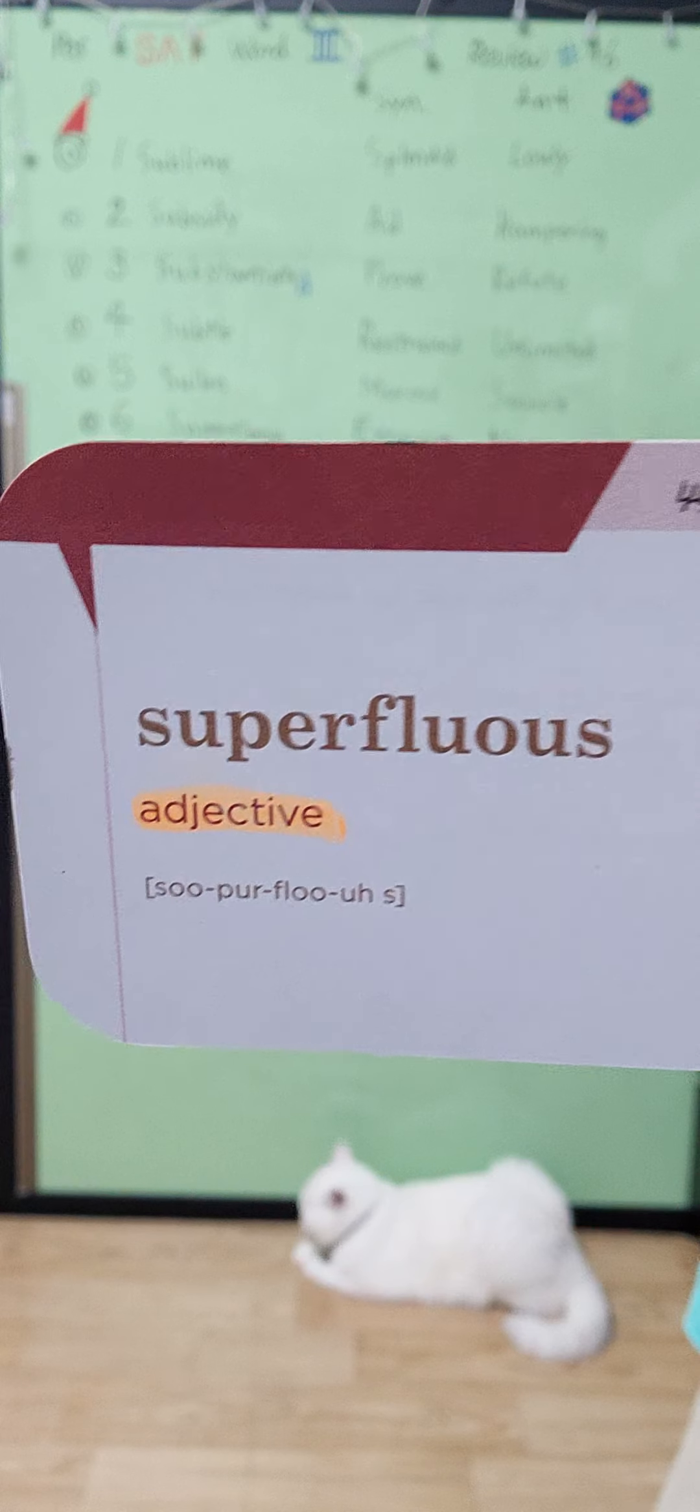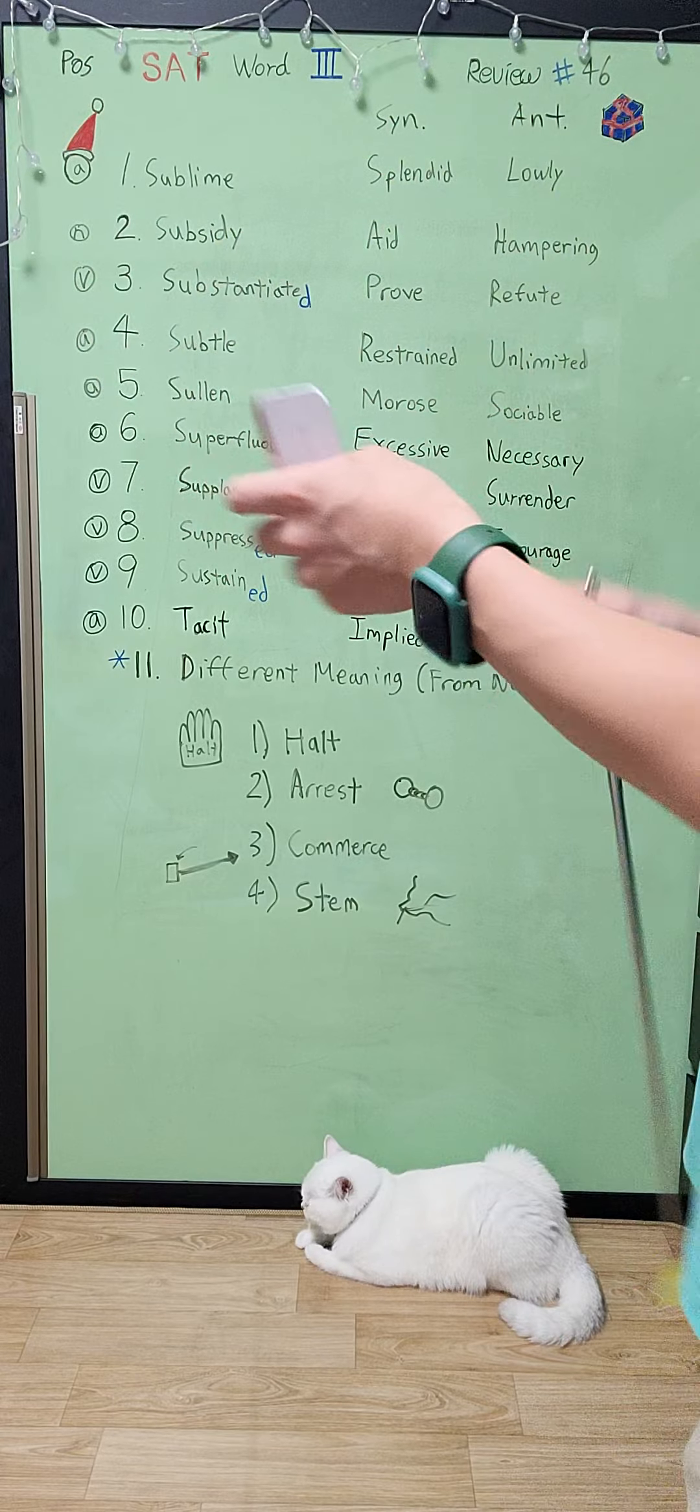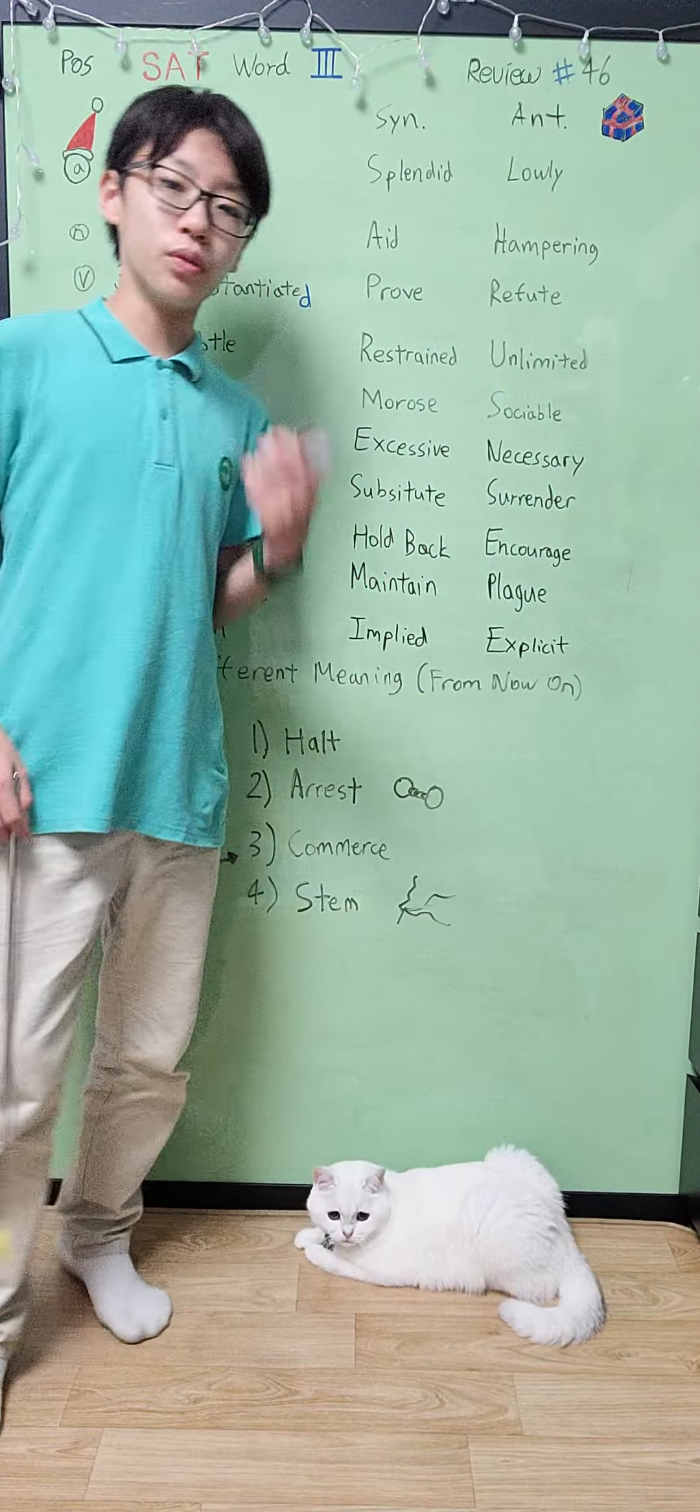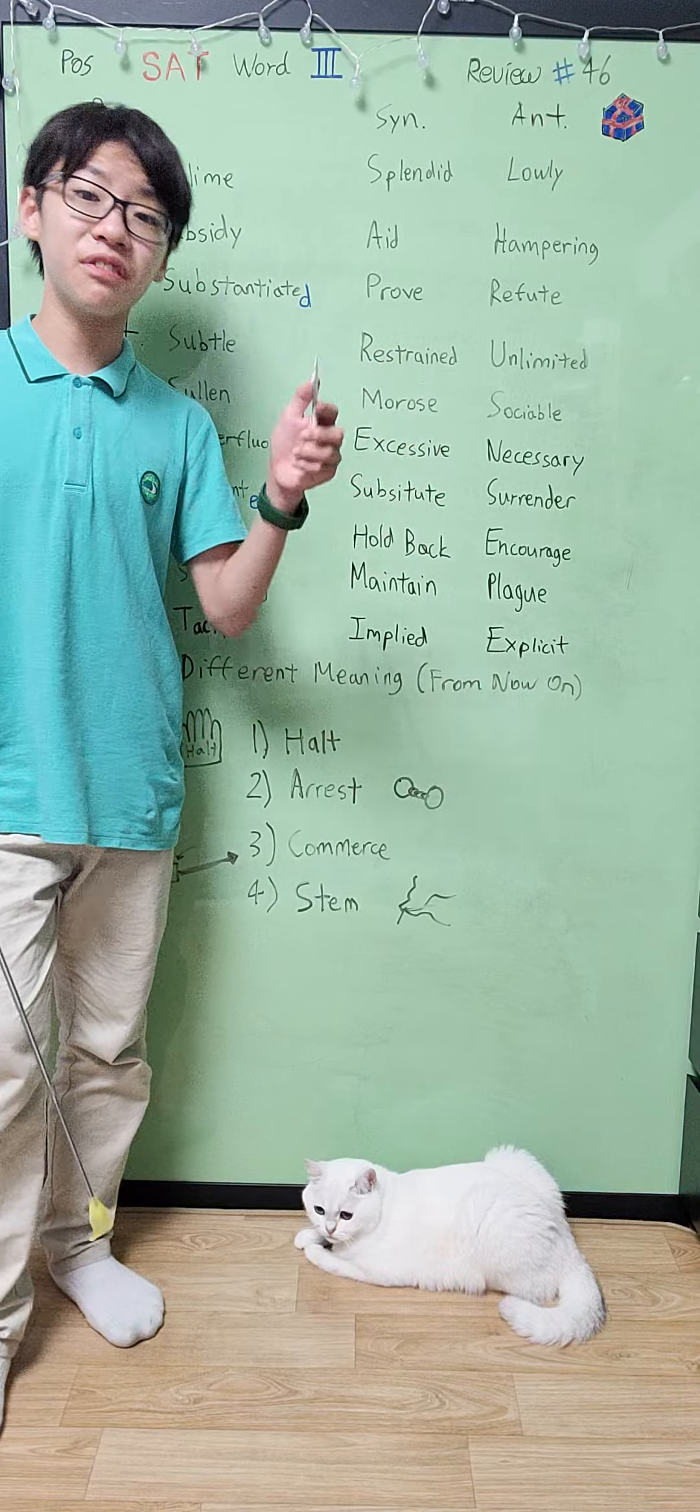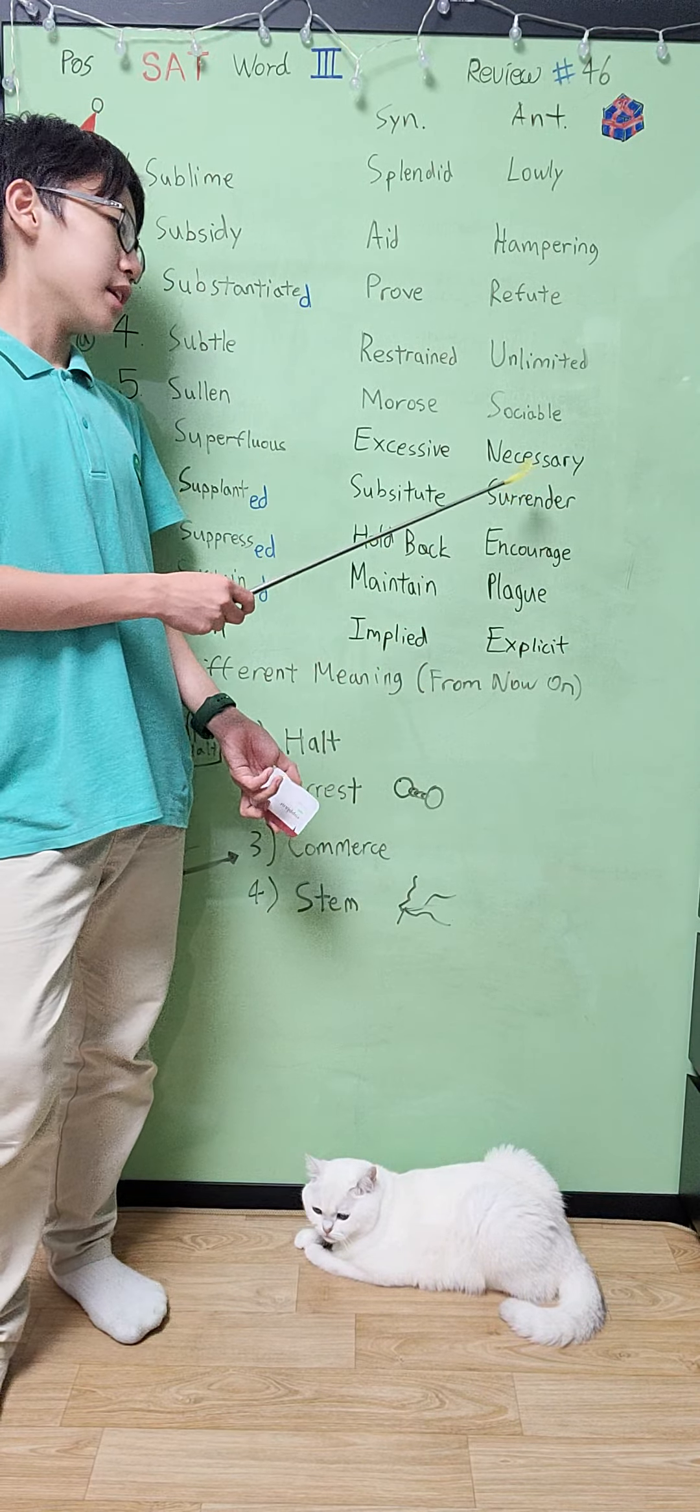Our next word is this one, an adjective called superfluous. It has nothing to do with Superman. It actually means more than is sufficient or required to do something, to be excessive towards something and having some unnecessary things. The antonym will be necessary, of course, or inxcessive.